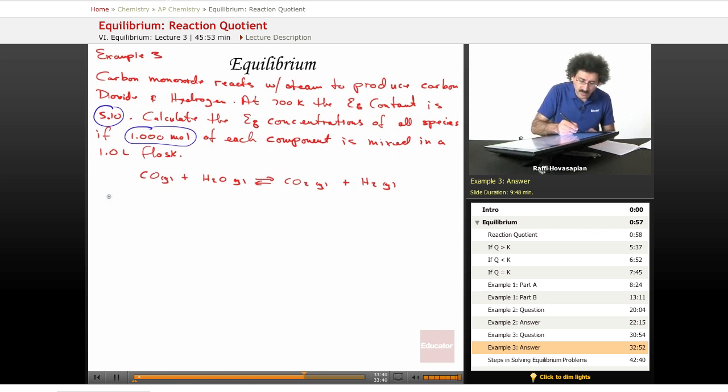So let's write the equilibrium expression for this, which is going to be the same as the reaction quotient. It is the concentration of H2 times the concentration of CO2 divided by the concentration of CO times the concentration of water. And that's also equal to the reaction quotient.